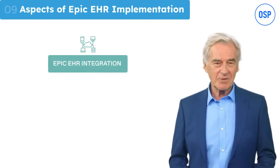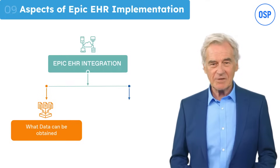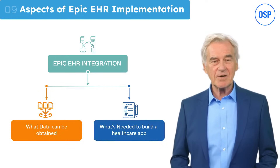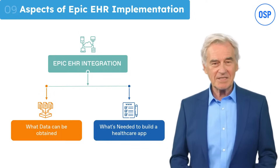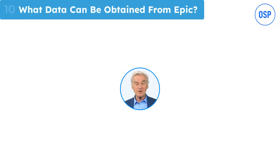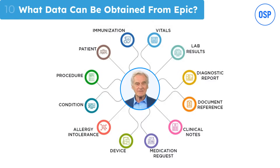I've touched upon almost every crucial aspect of Epic integration, except two: what data can be obtained from Epic, and what's needed to build a healthcare app with Epic integration. First, let's focus on what data can be obtained from Epic. When integrating Epic EHR using FHIR standards, some data sets are free while others will cost you. The free data includes vitals, lab test results, diagnostic reports, notes by clinicians, prescribed medication lists, information on implantable medical devices, treatment procedures, patient demographics, allergies, immunization, and patient conditions.